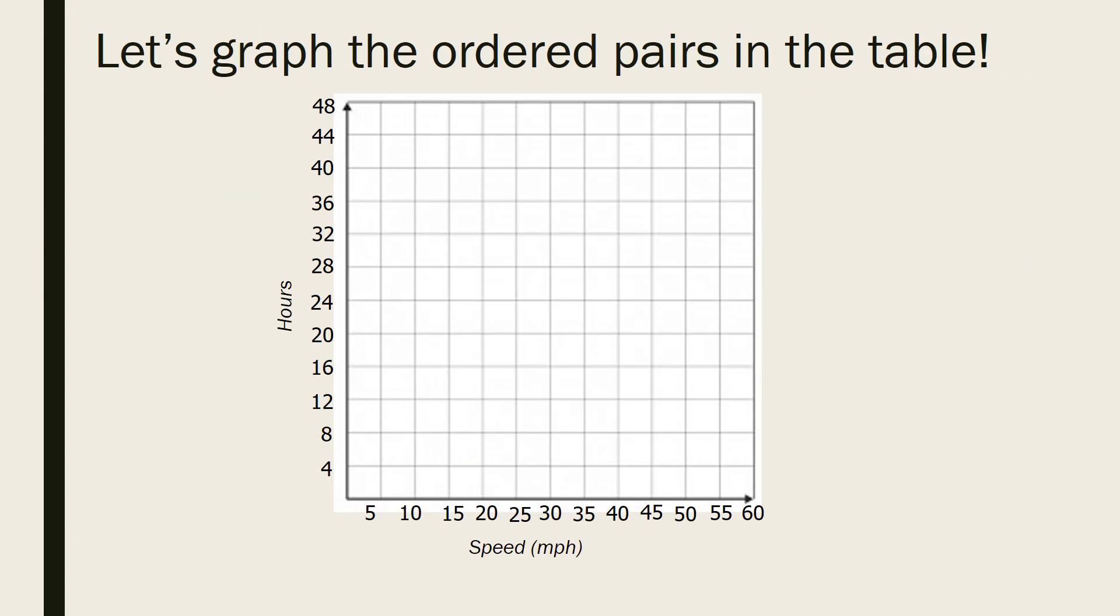So let's graph the ordered pairs from our table. Our first one is at 10,50, so we're going to put that a little bit above the 48. Our next was 25,20. Then we have 40,12 and a half, 50,10, and then finally 60,8.3. And when we connect these points, we make a curve.